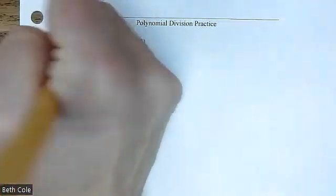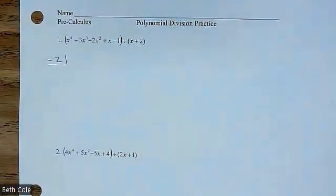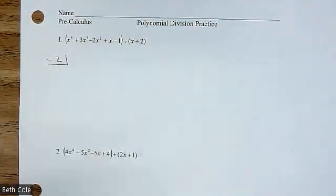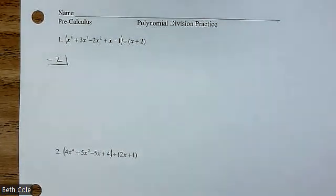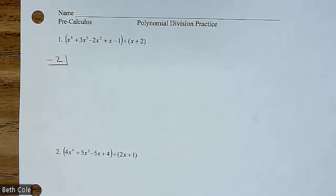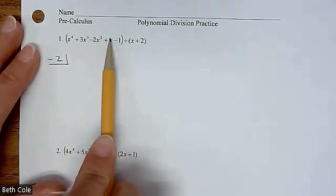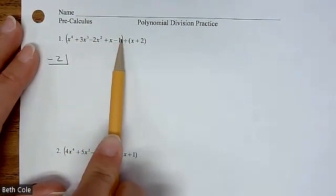Put negative two in a little box off to the side — just what will make that zero. Now you have to make sure your countdown is in order, and if it's not, you put zeros for the missing stuff, which should make sense. If you have nothing of something, you have zero of it. Let's check our countdown: 4, 3, 2, 1, 0. Are we good?